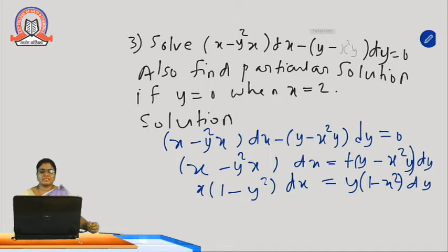Taking the second term to the right hand side, we get x minus y² x dx equal to y minus x² y dy. Now taking x outside on the left hand side and y outside on the right hand side: x(1 minus y²) dx equal to y(1 minus x²) dy.